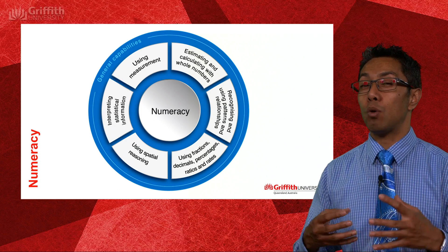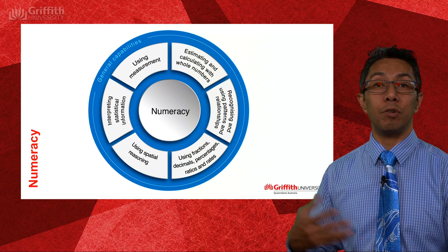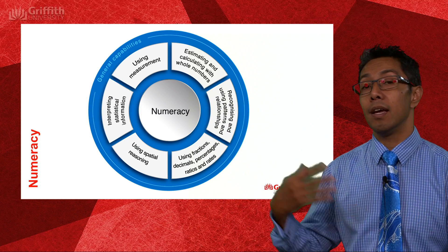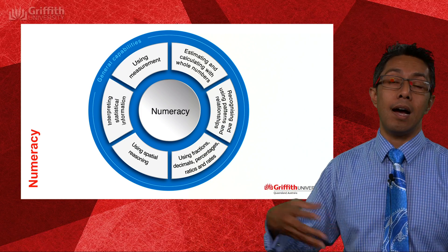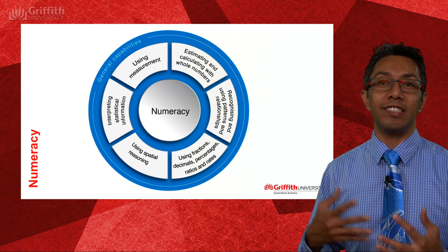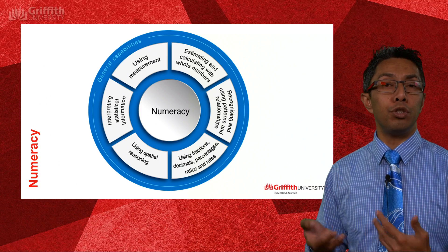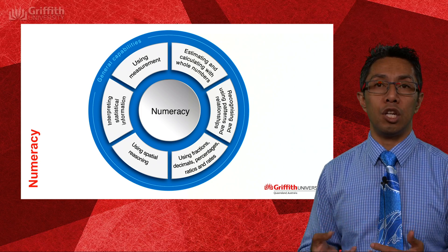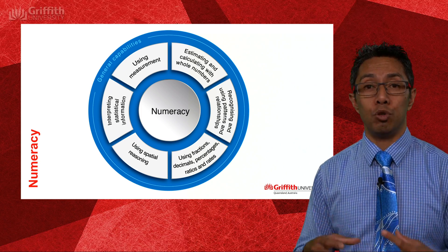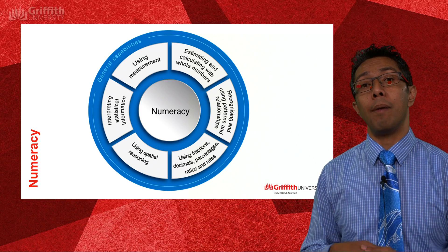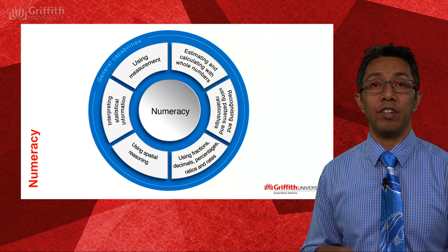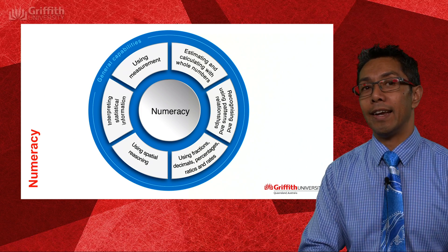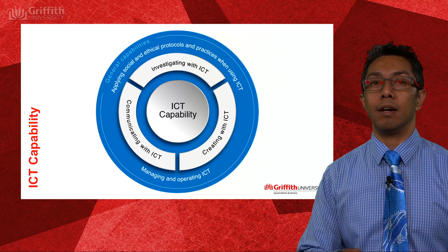Numeracy has quite clear links within the sciences because we're always measuring, estimating, using whole numbers, working with fractions, decimals, and percentages, and using spatial reasoning. In technology and engineering there's a lot of spatial awareness that comes into play, as well as map reading and interpreting visual diagrams. So there are quite clear links to how we develop numeracy within the sciences.